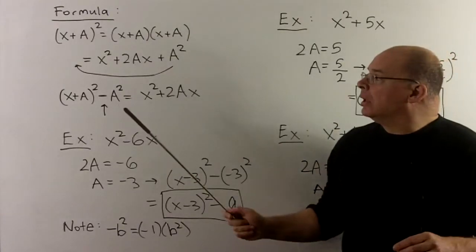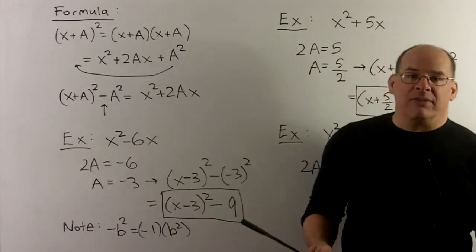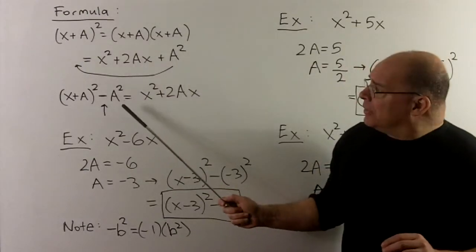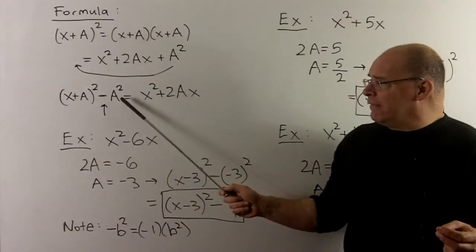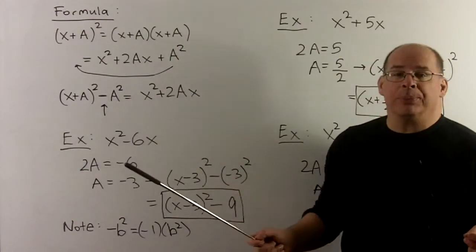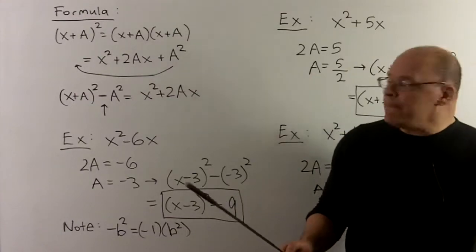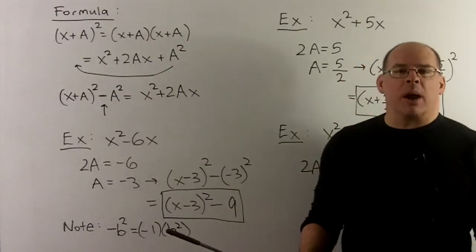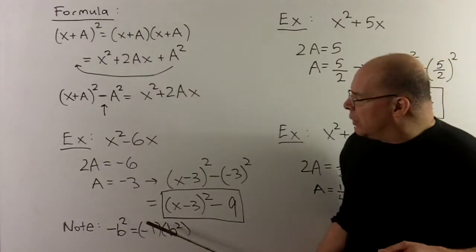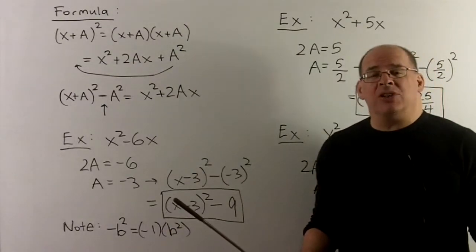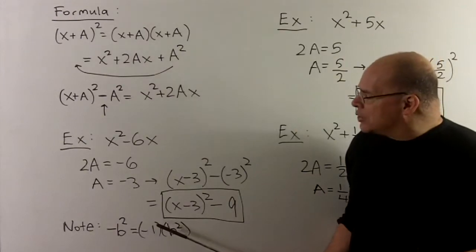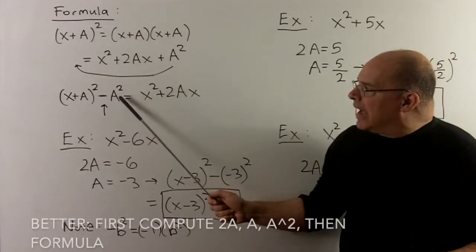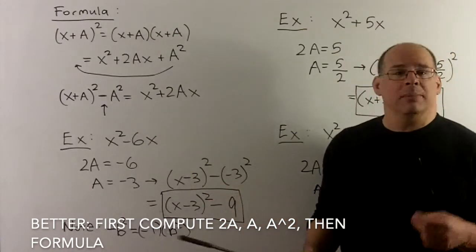Important point: in the formula, before the a squared we always have a negative sign — that never changes, regardless of whether a is positive or negative, and it's a common error. If a is positive, then a squared is positive and the negative sign doesn't change. If a is negative, remember from day one: minus b squared means minus one times b squared. PEMDAS says do exponents before multiplication, so we square first — positive comes out — and then the negative out front remains negative.